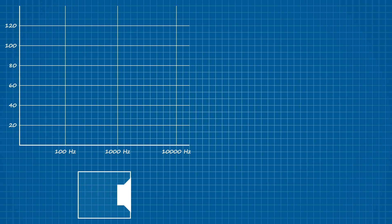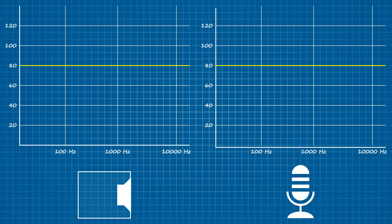Flat frequency response describes a perfect one-to-one relationship between the source and the output. Everything is to scale. To put it another way, flat response is to a speaker what a color-accurate profile is to a video monitor. It takes no liberties with the input — it simply delivers it without bias. Let's say that we have a speaker that delivers a perfectly flat response. We should be able to set up a measurement microphone directly in front of it and run a frequency sweep, the result of which should give us a nice flat line. So if we're reading 80 decibels at 20 hertz, then we're also reading 80 decibels at 20 kilohertz and everywhere in between.